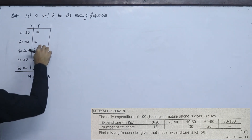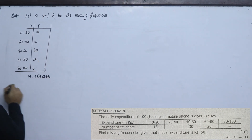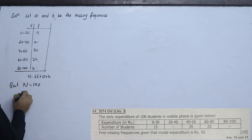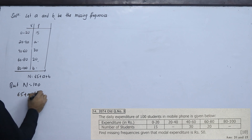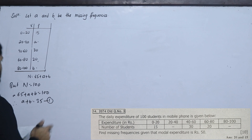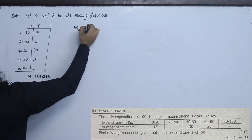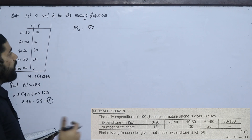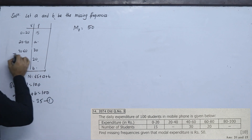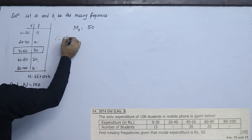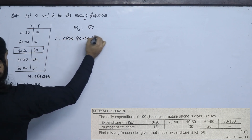The total is 15 plus A plus 30 plus 20 plus B equals 100, which gives 65 plus A plus B equals 100, so A plus B equals 35. Since the mode is 50, which lies in the class 40 to 60, the modal class is 40 to 60.